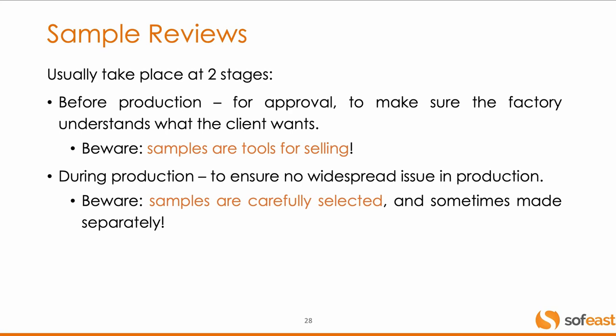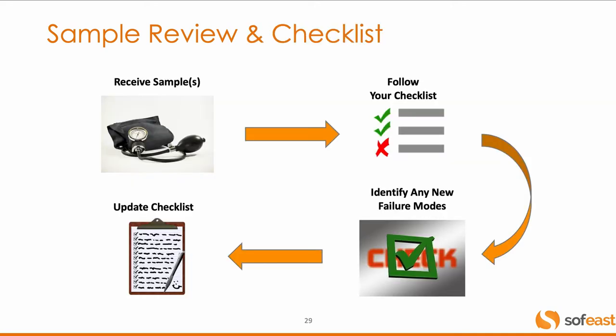Sample reviews also take place during production — very common for garments, for example. Send us the first pieces that come out of the line so we can check if you really understand everything. But be careful: sometimes even these samples are made separately in a sample room or by engineers on a bench. That's very typical. This is why you still need inspections. When you receive the samples, you need to follow your checklist, and whenever you can think of any potential issues, you record them in your checklist and in your list of potential defects. This is a living document — whenever you receive samples, you check them and then improve your checklist.